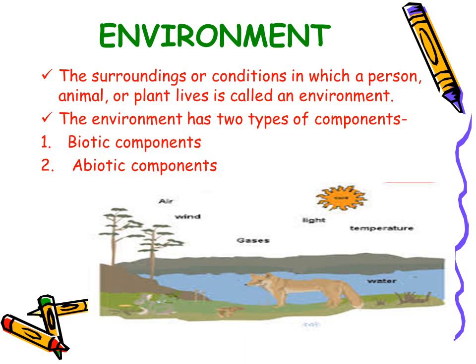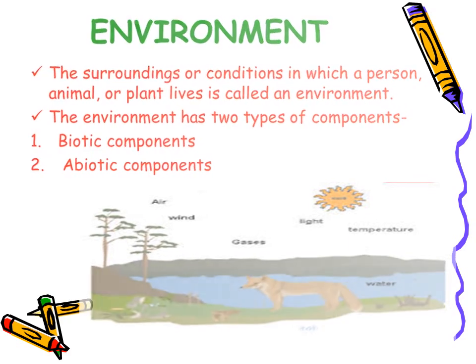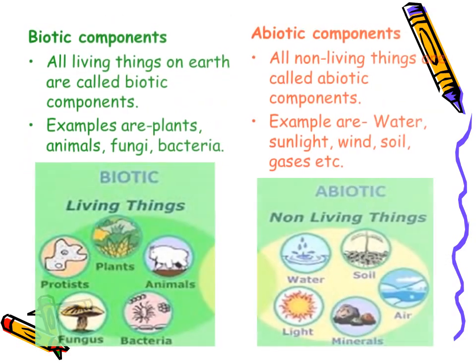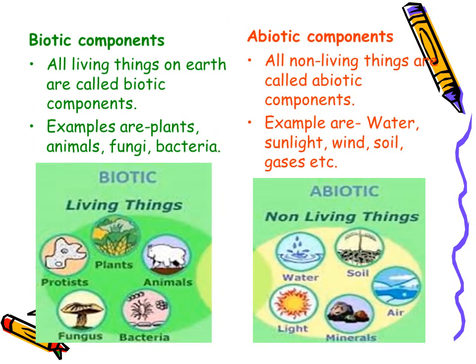This environment has been divided into two types of components. The first is biotic components and the second is abiotic components. You must have heard about the terms living things and non-living things. The proper scientific terms used for living things and non-living things are biotic components and abiotic components.